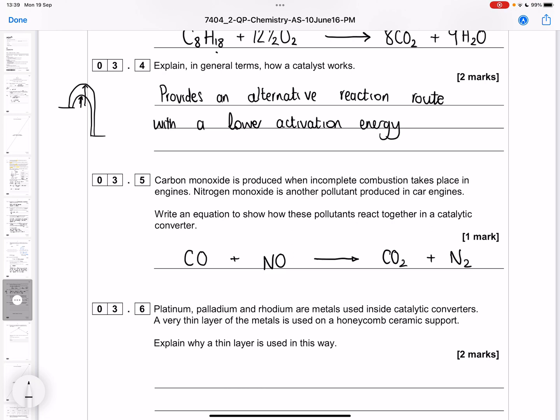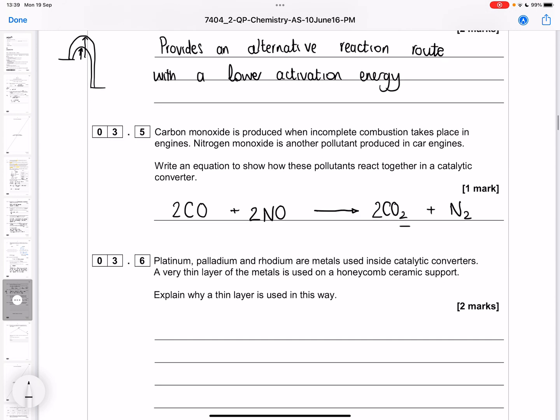Now we need to balance our equation. Because we've got N2, we're going to need two NOs. That gives us an odd number of oxygens on the left, and oxygen is coming in twos in the carbon dioxide on the right. So we need an even number. I'm going to double up the carbon monoxide and the carbon dioxide to make the same number of carbons and oxygens on each side.